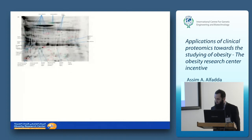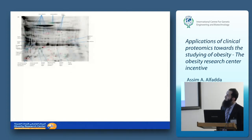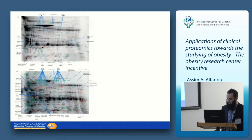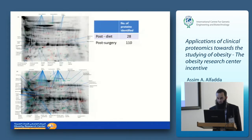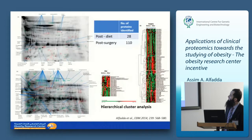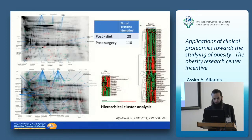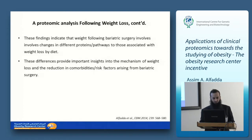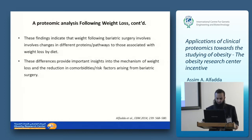On 2D gel analysis, the diet group showed fewer identified protein spots, while the surgery group had many more, indicating that the mechanism of weight loss post-surgery is more complicated than the dietary approach. The number of proteins identified post-diet was 28, and post-surgery was 110. Hierarchical cluster analysis showed significant differences between diet and surgery. These findings indicate that weight loss following bariatric surgery involves changes in different protein pathways compared to diet, providing important insight into the mechanism of weight loss and the reduction in comorbidities from bariatric surgery.